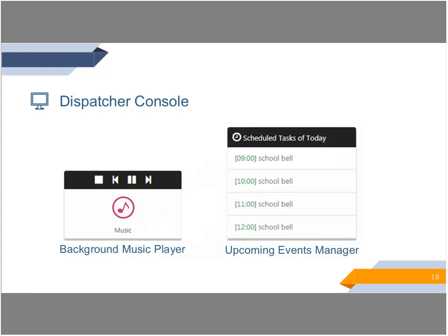There are two levels of system web UI access: the admin user and the dispatcher user. The admin user configures and manages everything on the MX500 system, while the dispatcher user controls calls, intercoms, paging, and background music. Here are the background music and upcoming events manager menus on the dispatcher's console. When there is background music playing, a scheduled PA or live announcement PA can pause the background music. When the PA is completed, background music will continue.